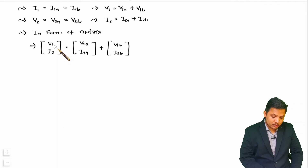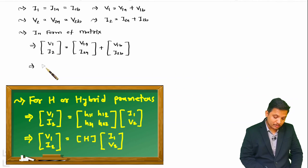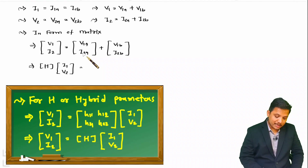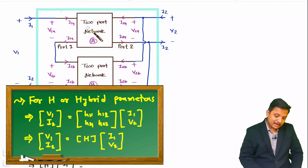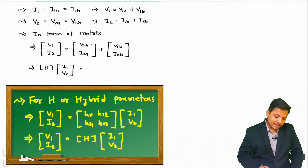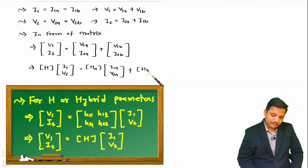The [V1, I2] matrix is expressed in terms of H parameters — the hybrid parameters. So [V1, I2] equals the H matrix multiplied by [I1, V2]. For two-port network A, [V1A, I2A] equals H_A multiplied by [I1A, V2A]. Plus for two-port network B, [V1B, I2B] equals H_B multiplied by [I1B, V2B].